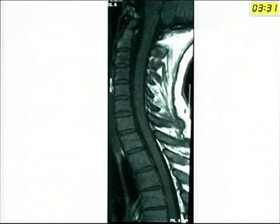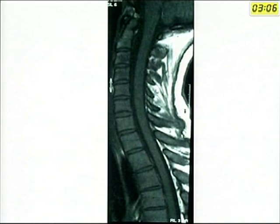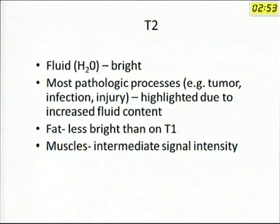How do you know if an image is T1 or T2? Look at the CSF surrounding the cord. If the CSF is dark, it is a T1 weighted image. In T2 weighted images, CSF is white — water is white on T2, dark on T1. Anatomical details are better seen on T1 weighted images. On T2 weighted images, fluid is bright, and most pathological processes like tumors, infection, and injury are highlighted on T2 due to increased fluid content.